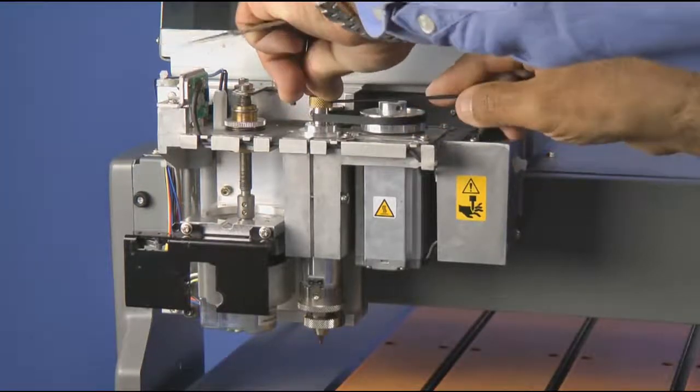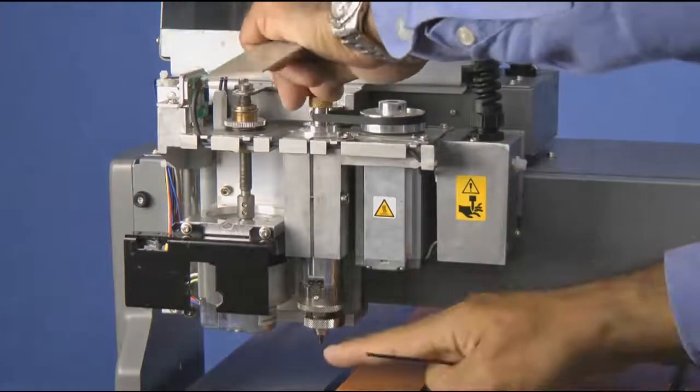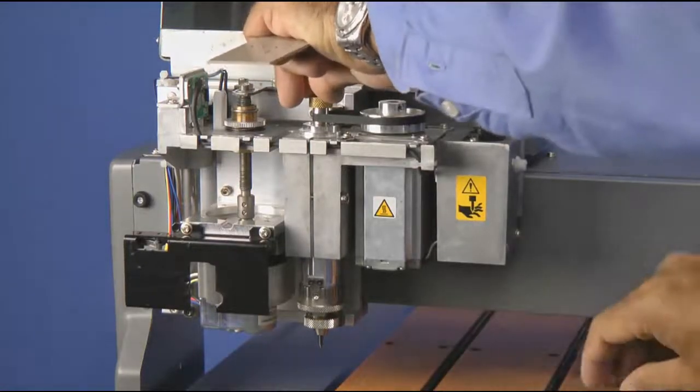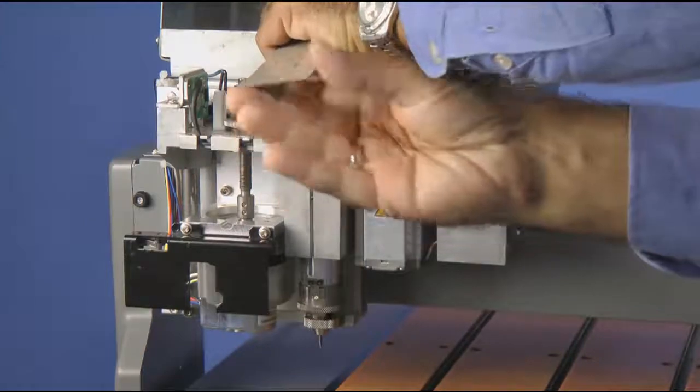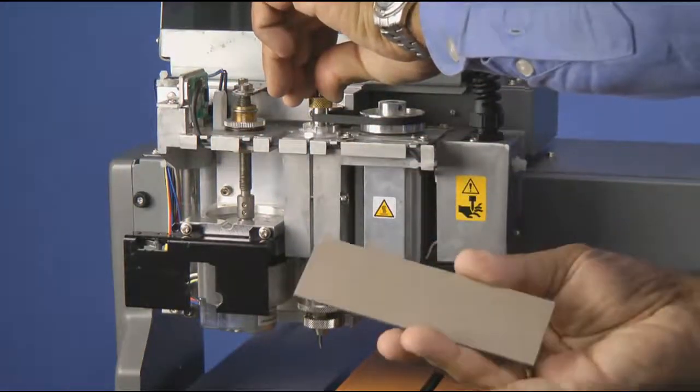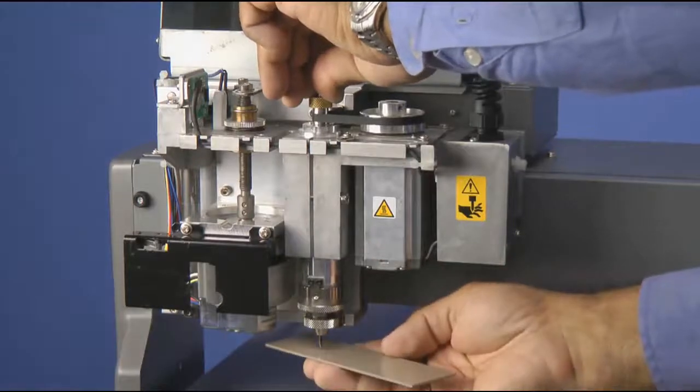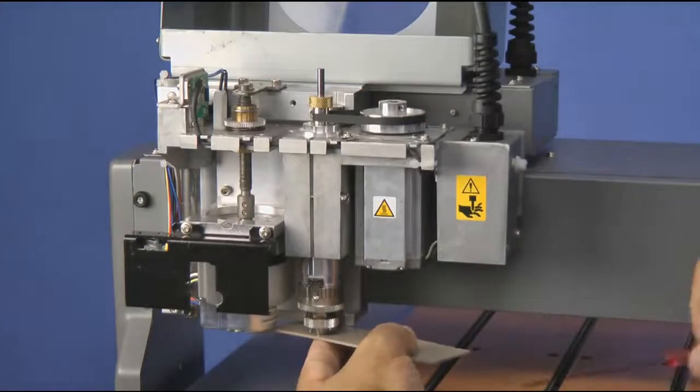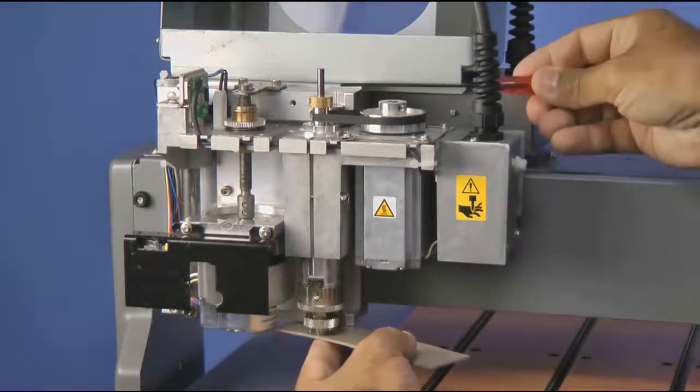Then you want to loosen the hex screw that holds the tool in place. If you notice, it is sticking out of the bottom. You can move it up and down. You will then take a solid piece of plastic or metal and you want to place it on the tool and push it up until it is flush with the bottom of the nose cone.